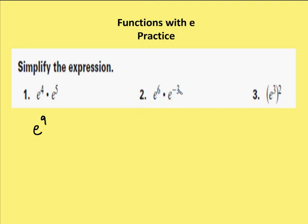Same property here, e to the 6th times e to the negative 3rd. I'm just adding the two values together. I get e to the 3rd.